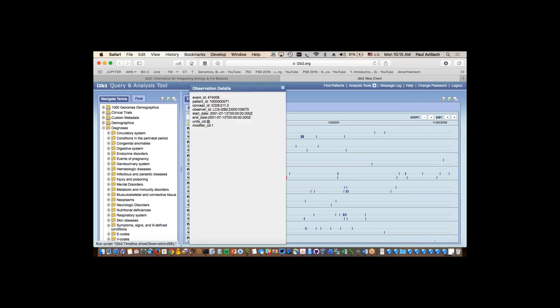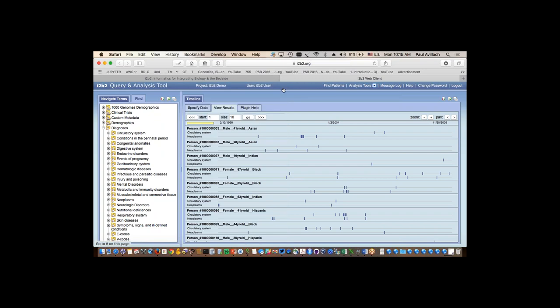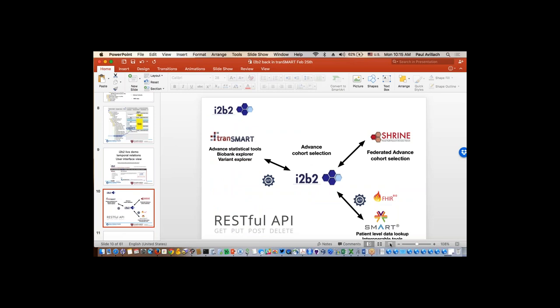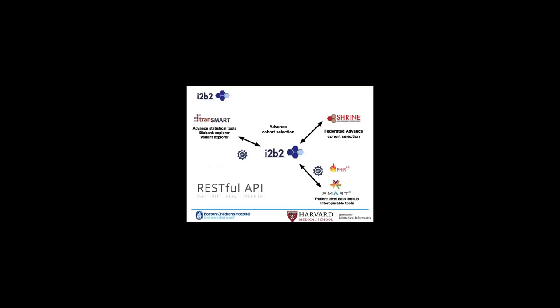In the timeline representation, one patient per line — a male 41 years old, a male 28, a male 19 — I can see 15 years of history with circulatory system and neoplasm events. The query was that the first neoplasm event was at least one year before the first circulatory system event. Clicking on an encounter shows the full information. The full time relation is already present within the I2B2 model, and that's what we want to reintegrate into TransMart version 1.7.